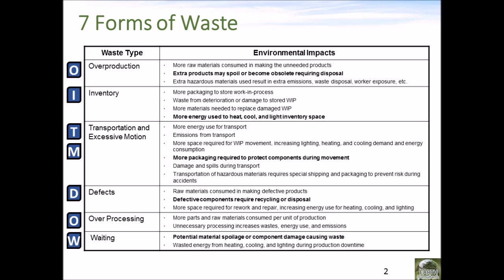We also have to package up those items to protect components during the movement, which is extra materials, and we have the risk of damage and spills during transportation. When we have defects, those defective components require us to either recycle, dispose, or scrap those items, and that can cost extra money — a lot of those will end up in the landfill. Even if they're recycled, there's still energy used in the recycling process. And when we're waiting, there's a potential that the material can spoil or that components can be damaged or corrode, and then we'll have to throw those away or recycle them and order new materials to replace those. So all these different forms of waste have an environmental impact that goes along with them.